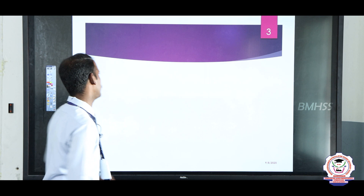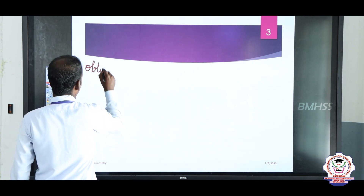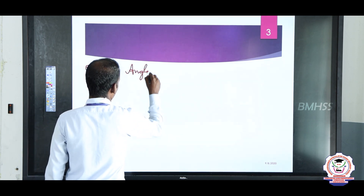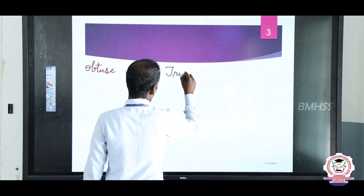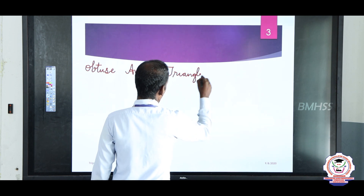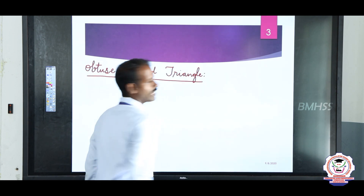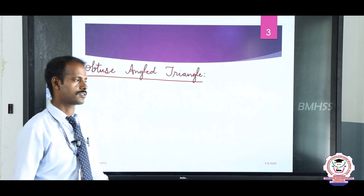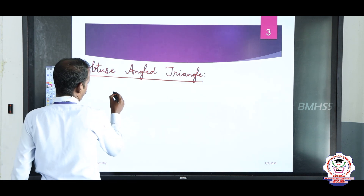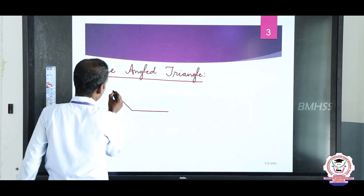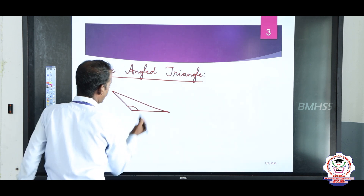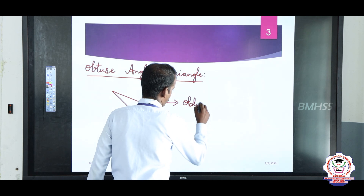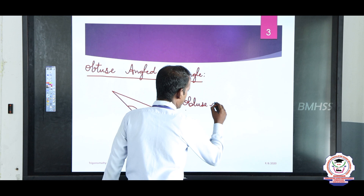Next one: obtuse angle triangle. What is an obtuse angle triangle? Any one of the angles more than 90 degrees is called an obtuse angle triangle. This angle is more than 90 degrees — it is called an obtuse angle triangle.